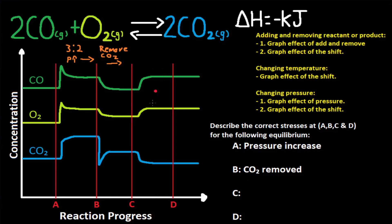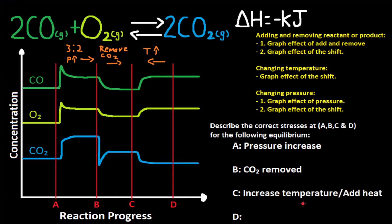At C, CO is increasing, O2 is increasing, and CO2 is decreasing. This is most likely a change in temperature since it is just graphing the effect of the shift. Since CO and O2 are increasing we need a shift left. This is an exothermic reaction so heat is treated as a product — increasing temperature means don't point at what is increased, giving a shift left. So the correct stress at C is increasing temperature or adding heat.